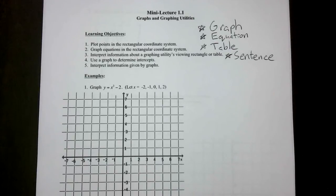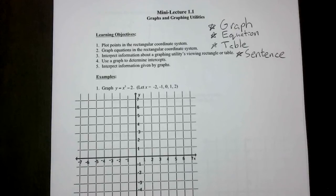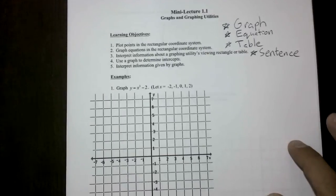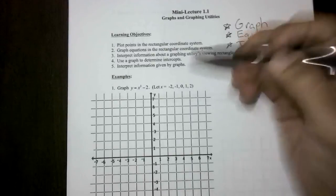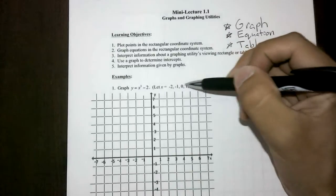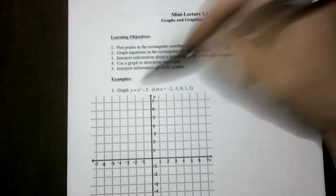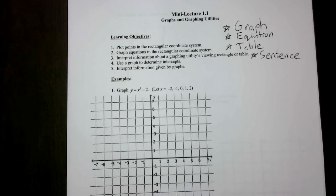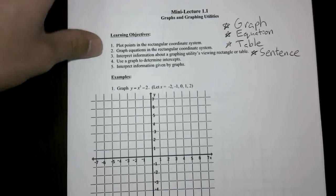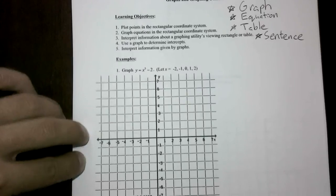If we kick into this first example, they have us graphing this equation with an x³ and we're deducting 2. They ask us to denote when x is -2, -1, 0, 1, and 2. Nothing we can't handle because we have our equation, we have our x terms, and we have our y output. So we just go right to it. Picking our poison, we'll start first with when x is -2.